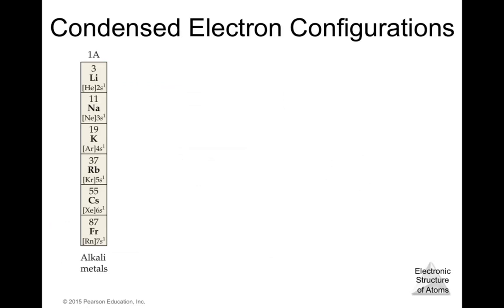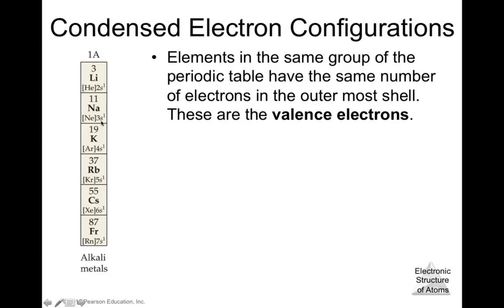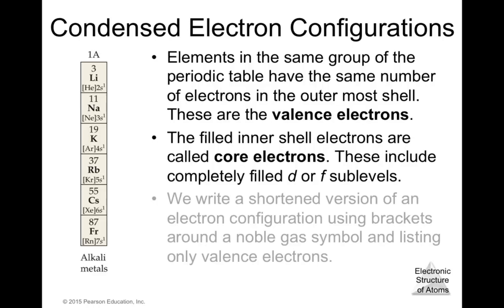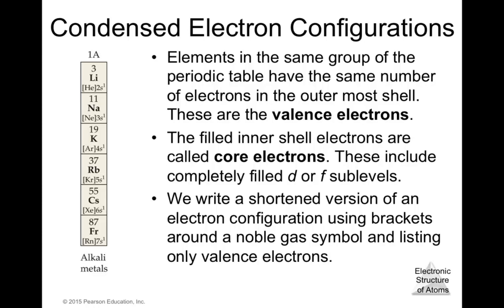In condensed electron configuration, the inner core electrons are represented by the noble gas symbol in brackets. For sodium: instead of writing 1s² 2s² 2p⁶ 3s¹, we write [Ne] 3s¹ because the 1s² 2s² 2p⁶ is the configuration of neon. Elements in the same group of the periodic table have the same number of electrons in the outermost shell — these are valence electrons. The filled inner shell electrons are called core electrons.